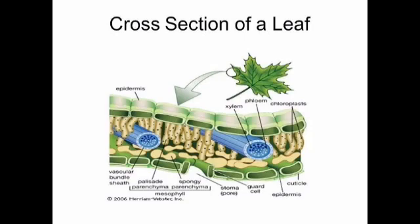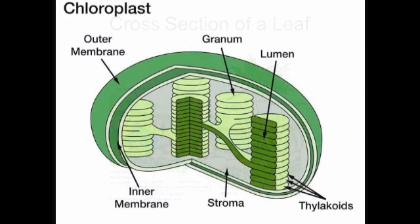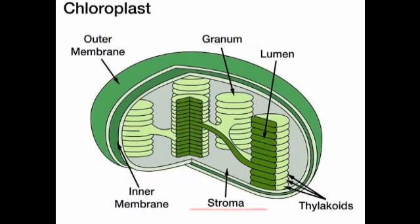Now let's have a look at the chloroplast structure. It is a double membrane structure. It has a stack-like structure called grana and a ground substance called stroma. Photosynthesis takes place in this chloroplast.